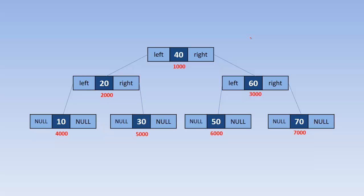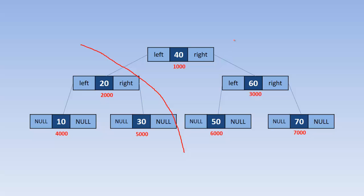Let's consider this binary search tree. 40 is the root node which has address 1000. 20 is the left child of node 40, so the address 2000 is stored in the left link. The right child has address 3000 stored in the right link. The other nodes have addresses 4000, 5000, 6000, and 7000 respectively. All elements on the left are lesser than 40 and all elements on the right are more than 40.